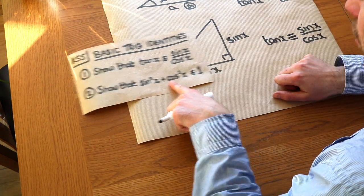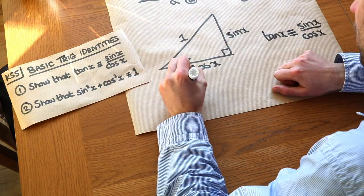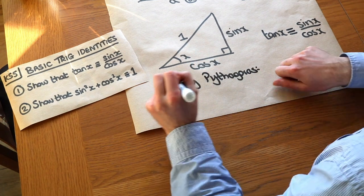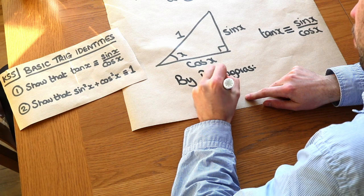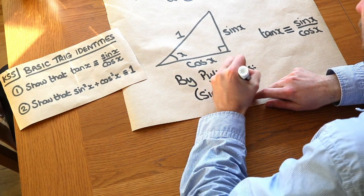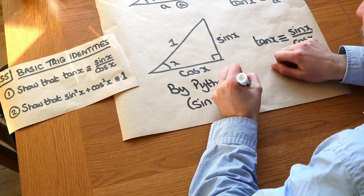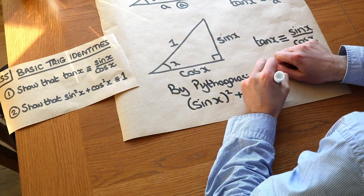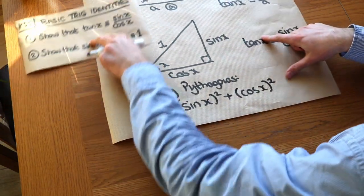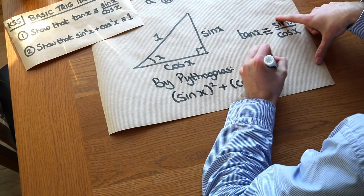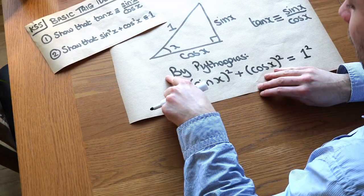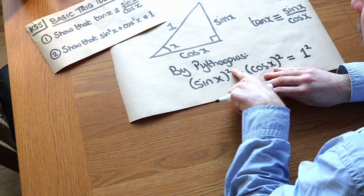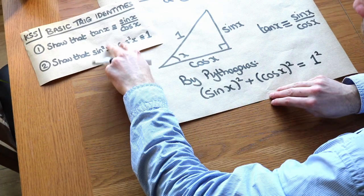And this other identity we can just prove by using Pythagoras. So by Pythagoras theorem, if we do this side squared, so sine of x all squared, plus this other shorter side squared, so cos of x squared, then we know that's equal to the hypotenuse squared, so equal to one squared. Now if we just simplify this, when we have sine of x all squared, there's a notational convenience for this. We can write it as sine squared of x.